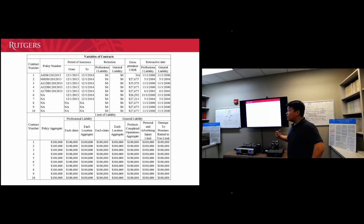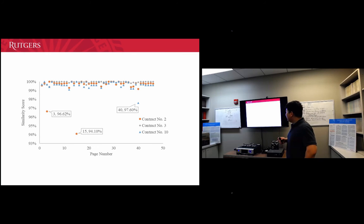Although we only use ten samples here, later, in application when using this on thousands of other contracts, it can extract very fast. And also the template inspection process here, I list the results of contract numbers two, three, and ten.